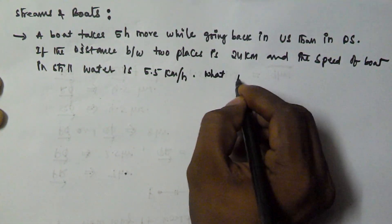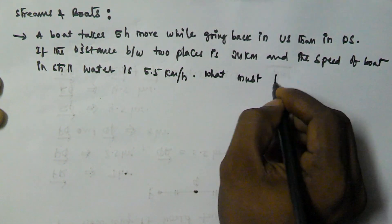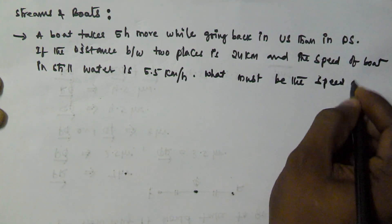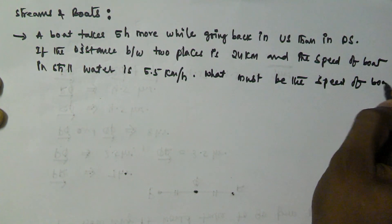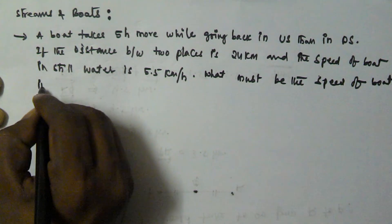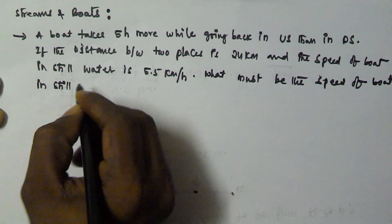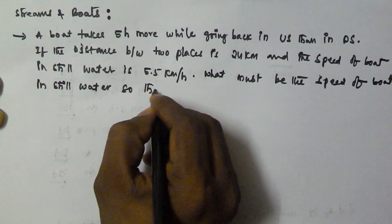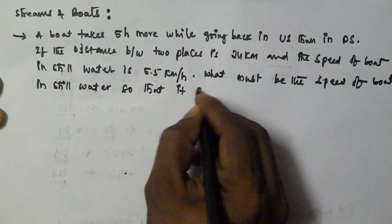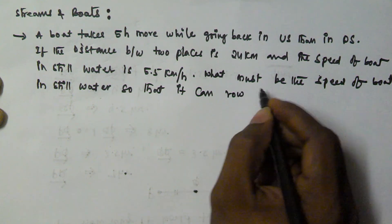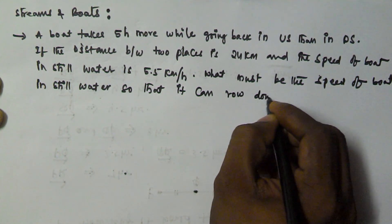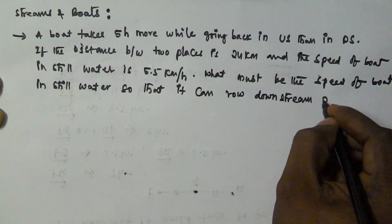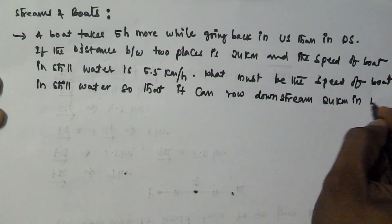Then we have to find what must be the speed of the boat in still water, so that it can go downstream 24 km in 4 hours.